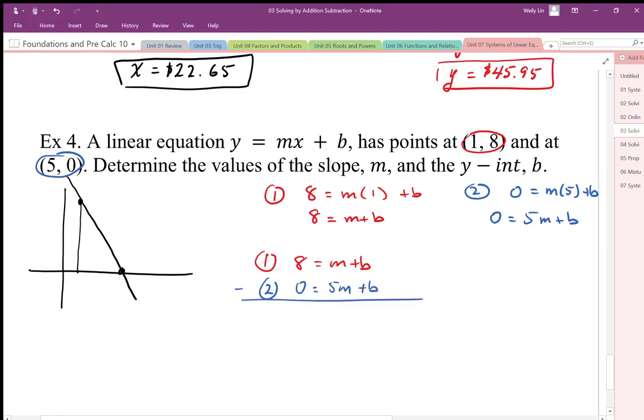And when I subtract these two equations, I come up with a new equation. 8 is equal to negative 4m. The m value works out to be negative 2.